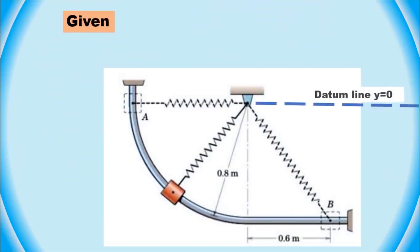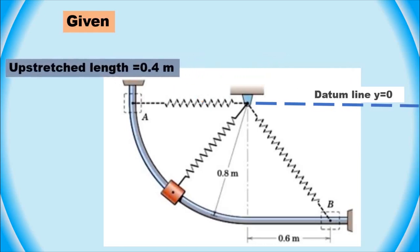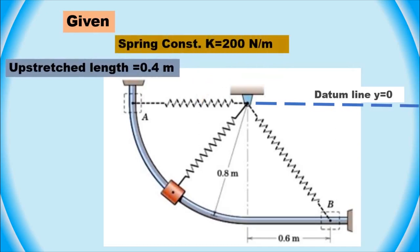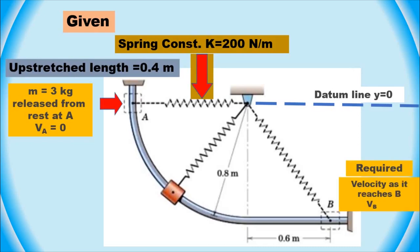First, what are the givens? The unstretched length of the spring is 0.4 meters and the spring constant K equals 200 newtons per meter. The mass of the slider is 3 kg, and the slider is released from rest at point A, which is the datum line. The question is: what is the velocity of the slider as it reaches point B in the absence of friction?